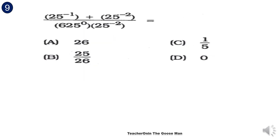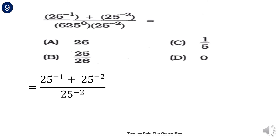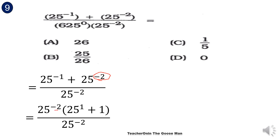Let's tackle this complicated law of exponents problem: 25 raised to negative 1 plus 25 raised to negative 2, divided by 25 raised to negative 2. I'll use factoring, with 25 raised to negative 2 as the common factor. Factoring out gives 25 raised to negative 2 in numerator; note negative 2 plus positive 1 gives negative 1. Since 25 raised to negative 2 divided by 25 raised to negative 2 equals 1, and 25 raised to 1 is 25, we get 25 plus 1 equals 26. The answer is letter A.